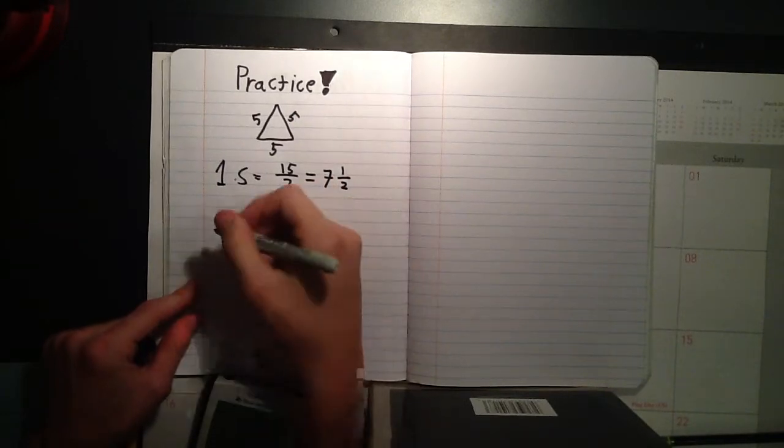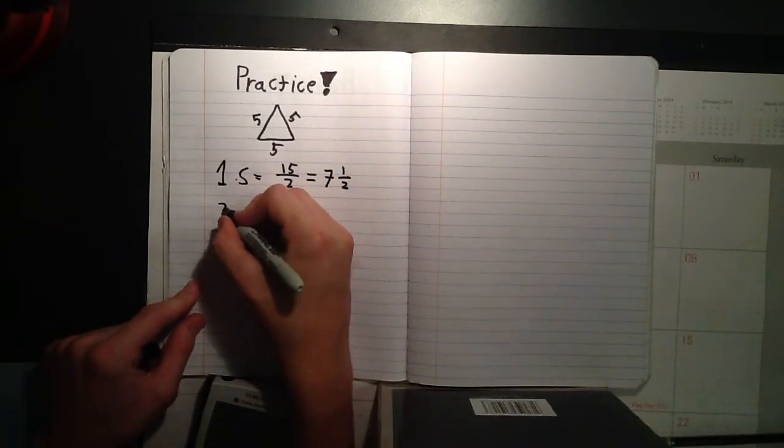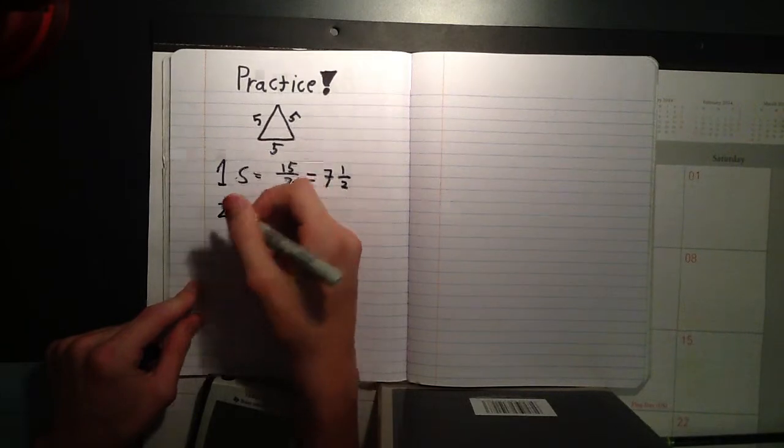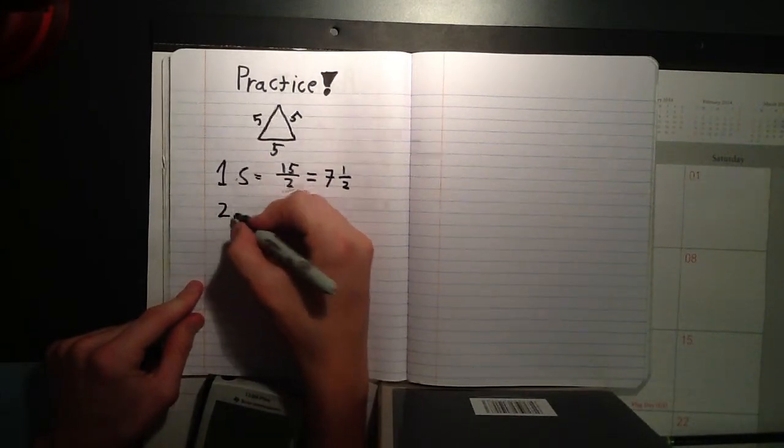Okay, Step 2. We'll have area is square root of 7.5 times...